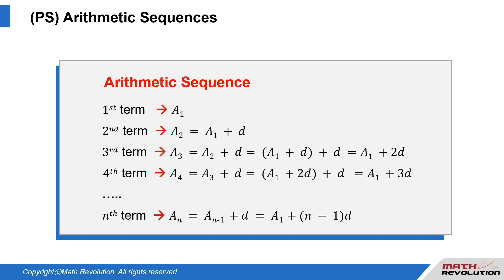If we break down each term, we get: first term a₁; second term a₂ equals a₁ plus d; third term a₃ equals a₁ plus 2d; fourth term a₄ equals a₁ plus 3d; all the way to the nth term: a(n) equals a(n−1) plus d, which equals a₁ plus (n−1) times d.